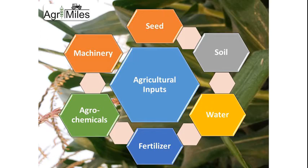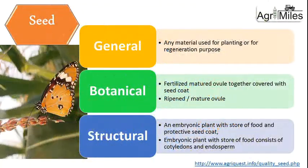Starting with the definition of seed. Seed can be defined in many ways. From a general perspective, any material used for planting and regeneration purposes is called a seed. Botanically, a fertilized mature ovule along with the seed coat is known as a seed, or in simpler words, a ripened or mature ovule is also known as a botanical seed.